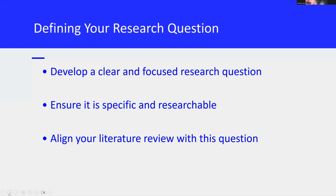Defining a clear and focused research question is the first step in writing a literature review. Your question should be precise and address a specific aspect of your topic — this focus will guide your literature search and review process. Make sure that your research question is narrow enough to be manageable, but broad enough to allow for a comprehensive review. It should be something that can be answered through existing research, and all the studies and findings you include should be relevant to answering and exploring your question.